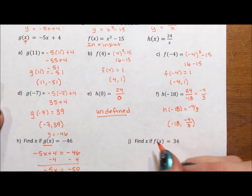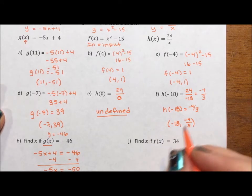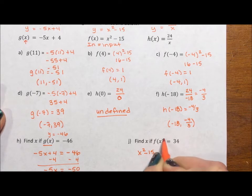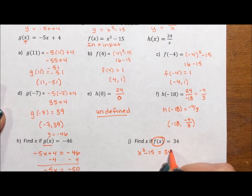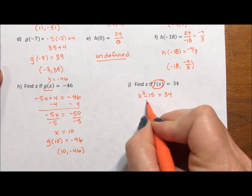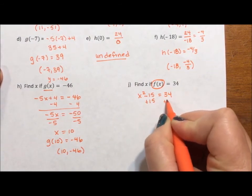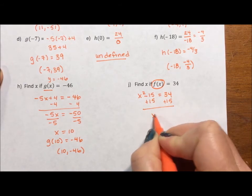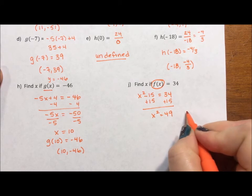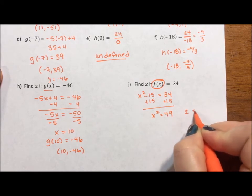For our next one, we have f(x) equals 34. So f(x) is x² - 15. This is just a name. It isn't multiplication. That equals 34. I am going to add 15 to both sides. x² equals 49.